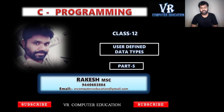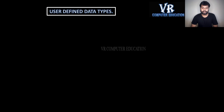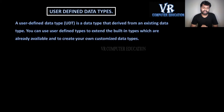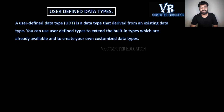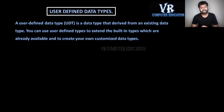So what is user-defined data types? A user-defined data type — in short, you can call UDT — is a data type that is derived from an existing data type. So from the existing data type, we will derive some new data types.